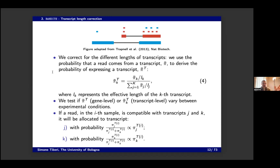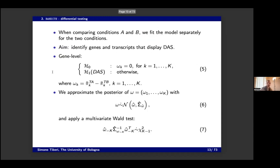We also account for the length of transcripts. Intuitively, if you take two equally abundant transcripts but one is longer, you will see more reads in that one because there are more places where reads can come from. So we normalize by the length of the transcripts.